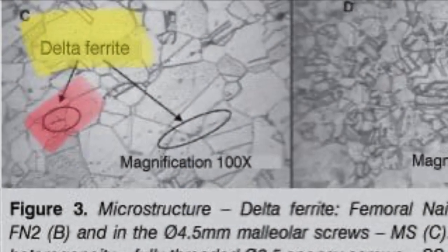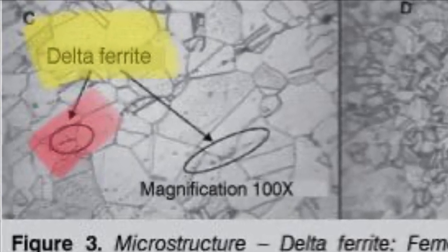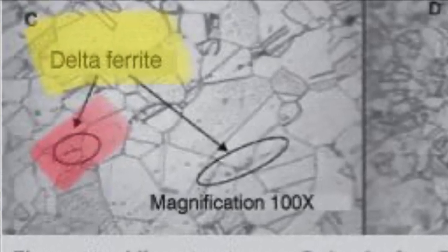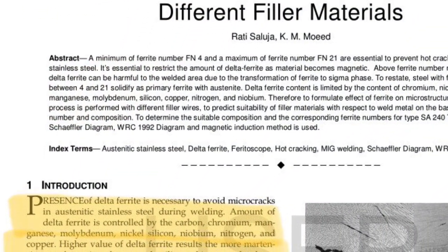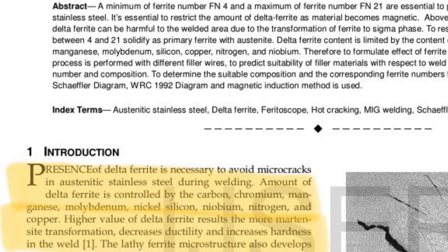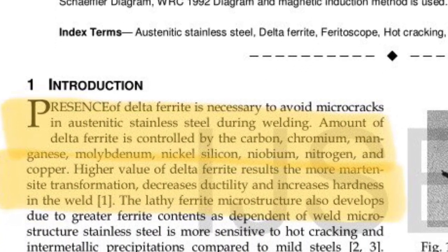Based on the chromium and nickel equivalent values, we can plot the ferrite number in the Schaeffler and DeLong diagram. This uses the magnetic attraction as the means of measuring the proportion of delta ferrite present in the material.